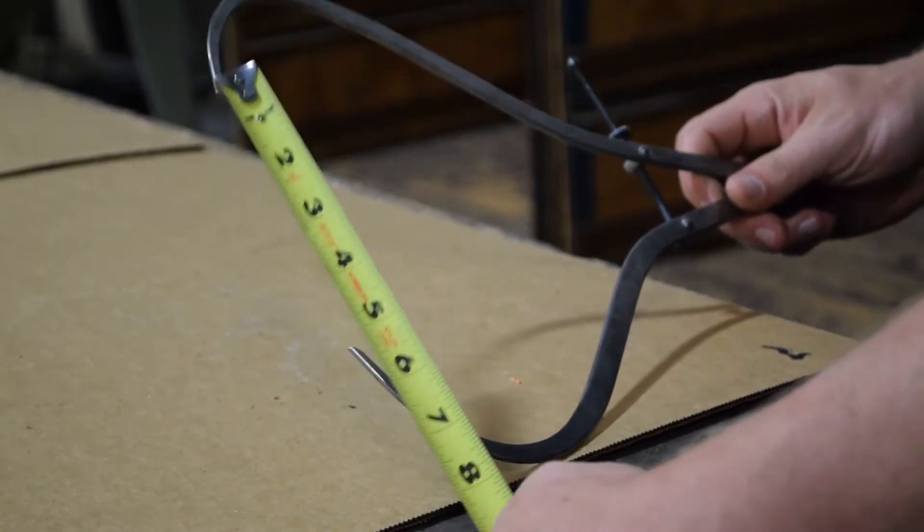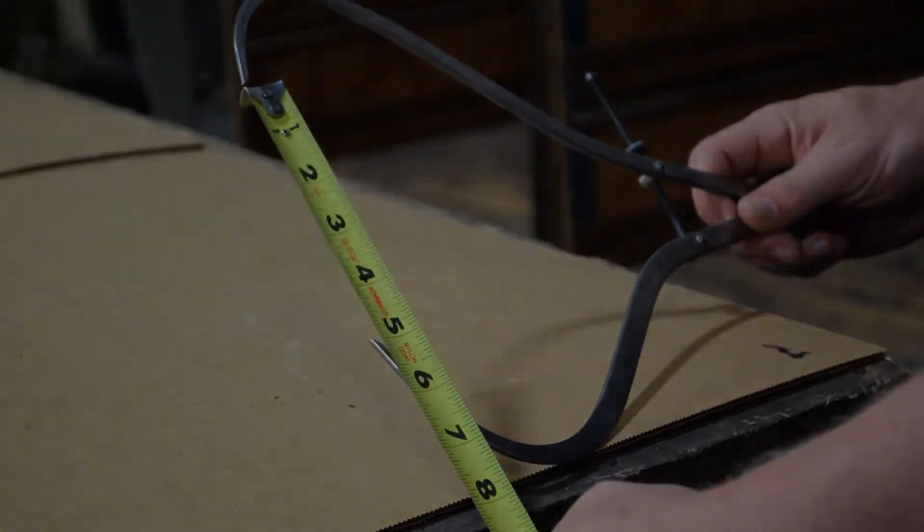Using outside calipers, measure the opening and this is the diameter of your barrel.